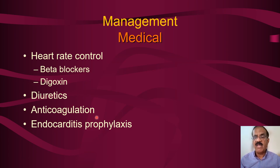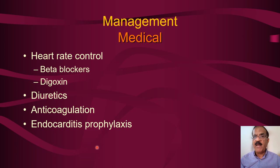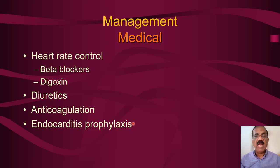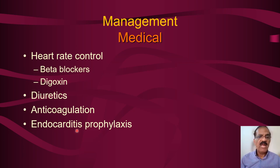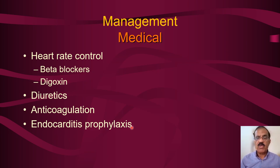Warfarin is used on a long-term basis to prevent thromboembolism. Endocarditis prophylaxis is also important — whenever these patients undergo any procedure, a course of antibiotics is given, selected according to the site of the procedure. For dental procedures, a penicillin-based antibiotic might be given; for urogenital procedures, antibiotics against gram-negative bacteria are given, typically intravenously. We generally start 48 hours before surgery and continue until 48 hours after surgery so that these patients do not develop endocarditis.